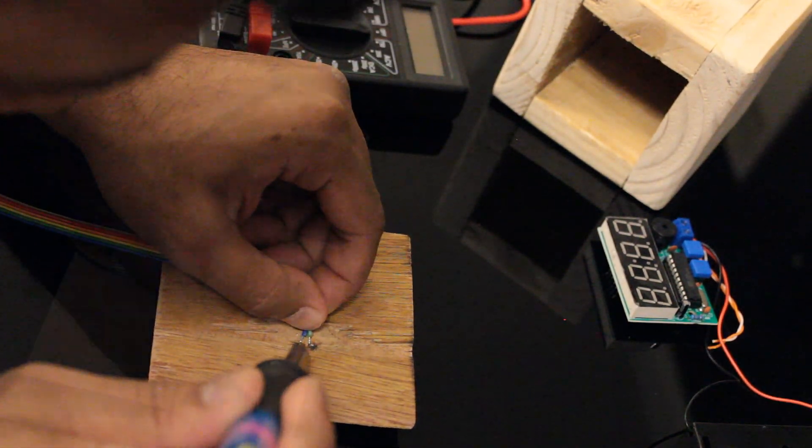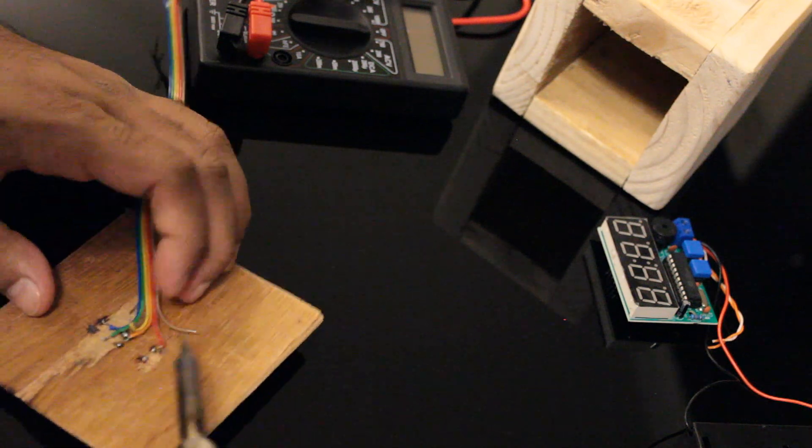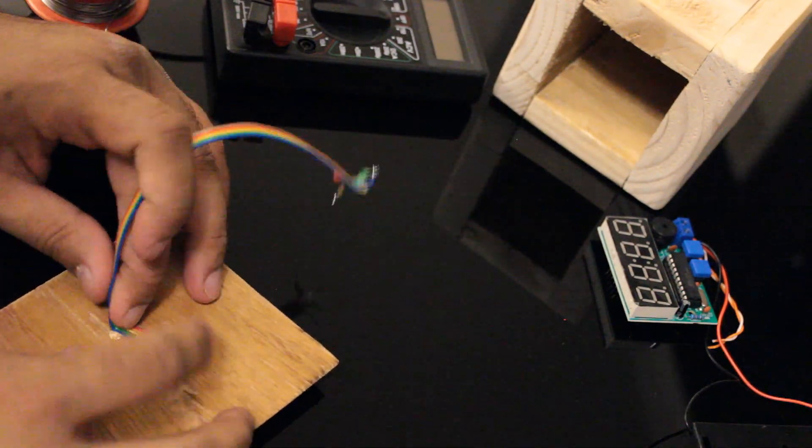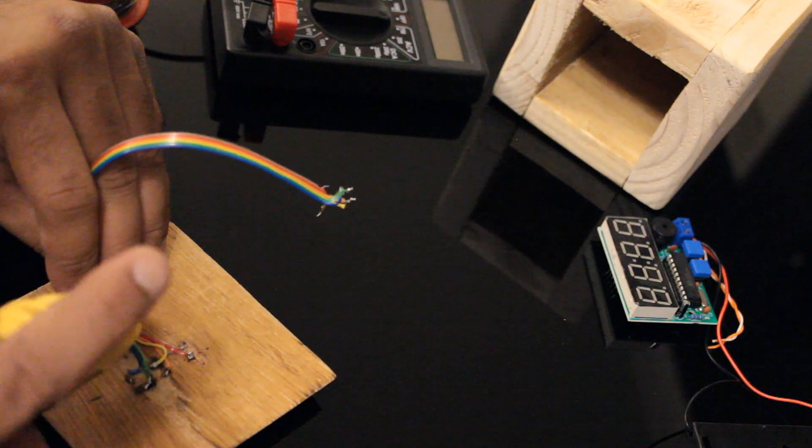After that, I'm soldering a six-way ribbon cable to the push buttons. It was actually a bit of a challenge to solder the ribbon to the buttons. So, to hold the cables tight, I'm adding a bit of hot glue to it.